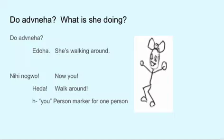Doadaneha — What is she doing? Edoha — She's walking around. In Edoha, the e sound indicates that it's she who is walking around. Nihihnogui. Heda — Walk around. Heagehiuza adedoha — This girl is walking around. Nogui edoha. Heda, heda — You walk around, a command. The h-u person marker for one person is clear in the heda sound. Adoha is a present stem; heda is a command stem, or an immediate stem.